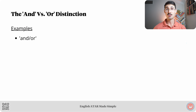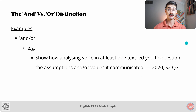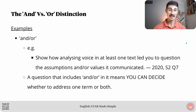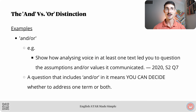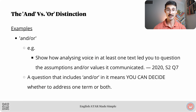Then we looked at and/or examples. One of those was: 'Show how analysing voice in at least one text led you to question the assumptions and/or values it communicated.' In this instance you should discuss assumptions, values, or assumptions and values — one of those three options. Key takeaway: a question that includes 'and/or' means you can decide whether to address one term or both.